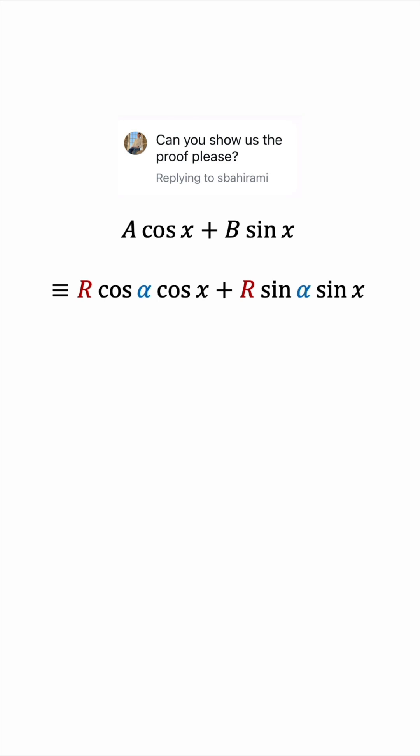Notice that the coefficient of cos x is A on the left-hand side and R cos α on the right-hand side, so these must be equal. And we'll do a similar thing for the coefficient of sin x as well. So we have these two equations, two unknowns. Of course, A and B are known constants.